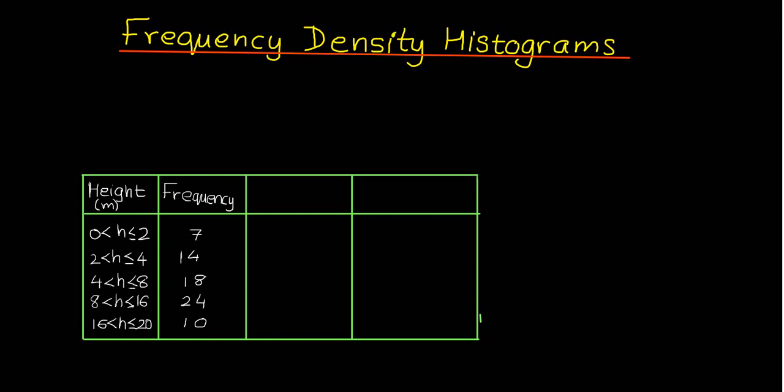We use a frequency density histogram to represent the data because the bars are going to be of different widths, so the areas of each bar will represent the frequency.